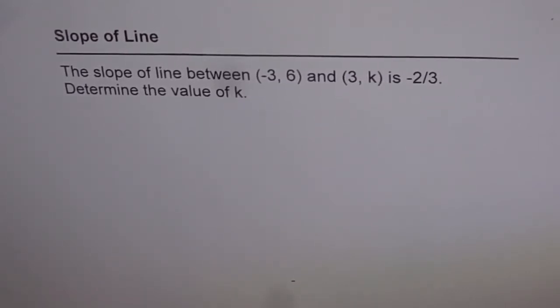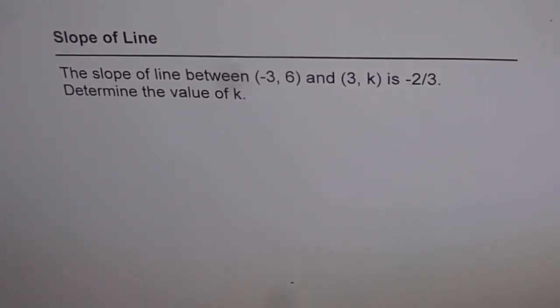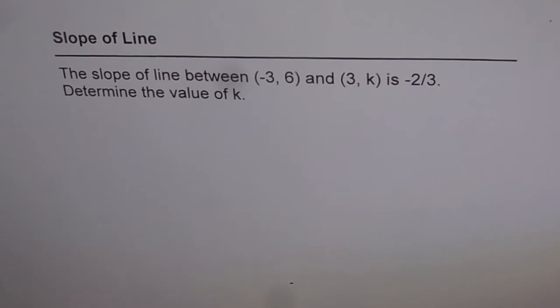Slope of line. The slope of the line between point (-3, 6) and the point (3, k) is -2/3. Determine the value of k.